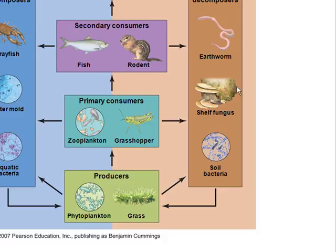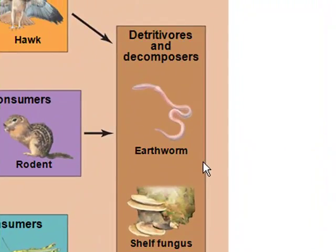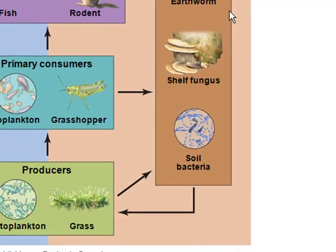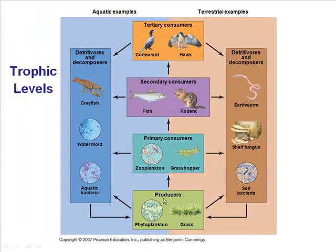Detritivores, such as millipedes, earthworms, and soil insects, scavenge waste products or dead bodies of other community members. Decomposers, such as fungi and bacteria, break down leaf litter and other non-living matter into simple constituents that can be taken up and used by plants. These are the recyclers in the ecosystem — they return materials back to the plants, which can then use those materials to make their own food and provide food for the rest of the ecosystem.